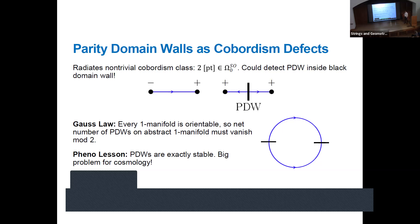The fact that the parity domain wall carries a gauge charge tells us something about phenomenology: parity domain walls are exactly stable. If they decay to something, that something is also a parity domain wall. This is a big problem for cosmology, because it produces exactly stable domain walls in the early universe that would come to dominate the energy density — yet we don't see them in the sky. So you have to explain them away, perhaps by inflation or some other mechanism.